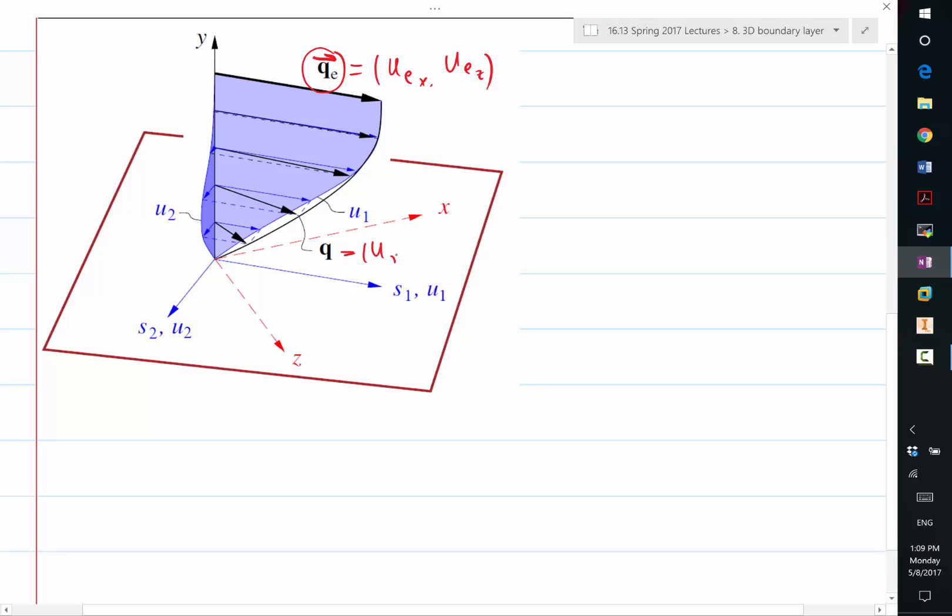But the two directions tangential to the surface are lumped together into a Q. So Q is our UX and UZ inside the boundary layer. So now whenever we talk about the vector Q, it's like our U in the 2D boundary layer, separate from the V.